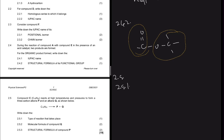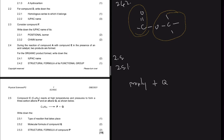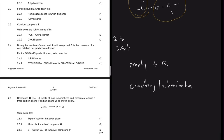For 2.5, compound C with 10 carbons and 22 hydrogens reacts at high temperature and pressure to form a three-carbon alkene - that's propene - and compound Q. For 2.5.1, write down the type of reaction that takes place. This is cracking. You can see this big compound has cracked into P and Q. Cracking, or you can write elimination, which is also acceptable.